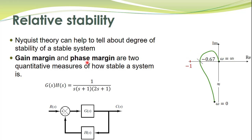The second quantitative measure is phase margin. On the polar plot, we locate the point with magnitude equal to 1 — all points on the unit circle have magnitude equal to 1. If we add a certain phase angle to shift this point to the critical location, the system becomes marginally stable. That required angle is the phase margin.